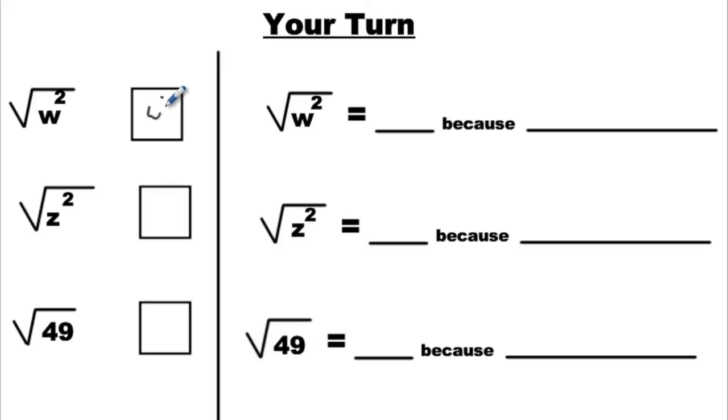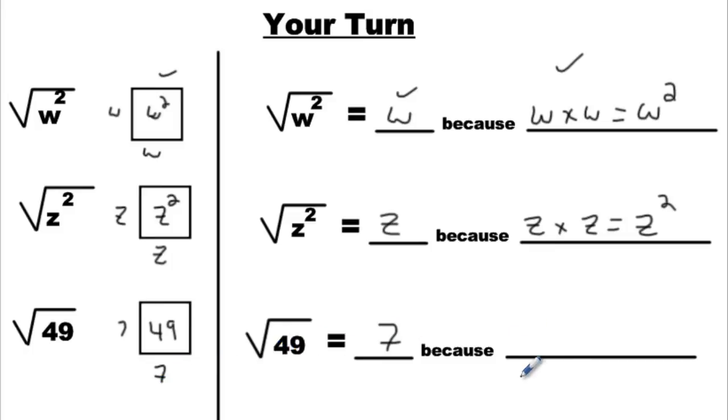So we got here W squared is what needed to go inside. That makes W and W for my dimensions. So we write W because W times W equals W squared. Give yourself a mark, a mark, and a mark. That's a three mark kind of question. Second part, you should have put the Z squared here because it's under the root side. And then you're going to put Z and Z. And so the square root is going to be Z because Z times Z makes Z squared. Here we've got the square root of 49. So we put 49 inside. Dimensions are going to be 7 and 7. So the square root of 49 is going to be 7 because 7 times 7 equals 49.